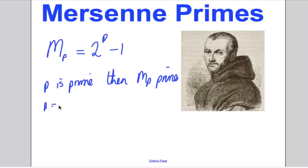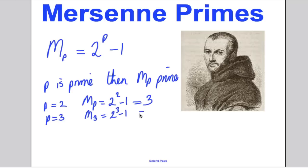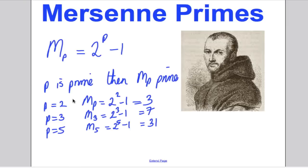For example, if p equals 2, then M_p would be 2 to the power of 2 minus 1, which is 3. If p was 3, another prime, then M_3 would be 2 to the power of 3 minus 1, which would be 7 — prime. If p was 5, then M_5 would be 2 to the 5 minus 1, which equals 31, also prime. And so it was thought that these numbers would always be prime.